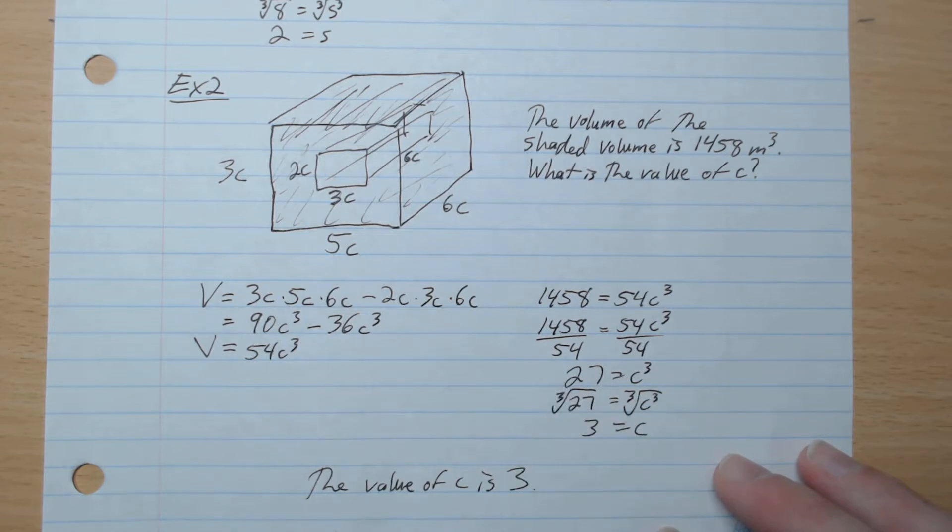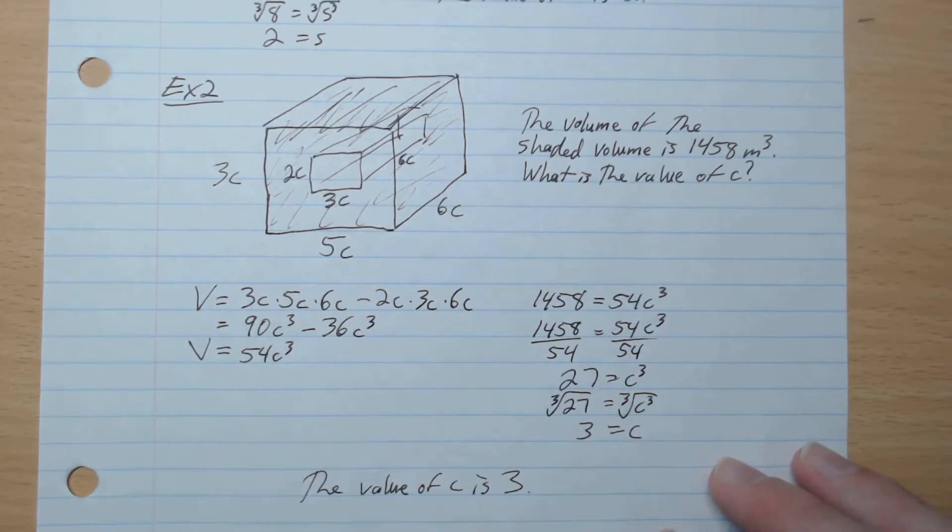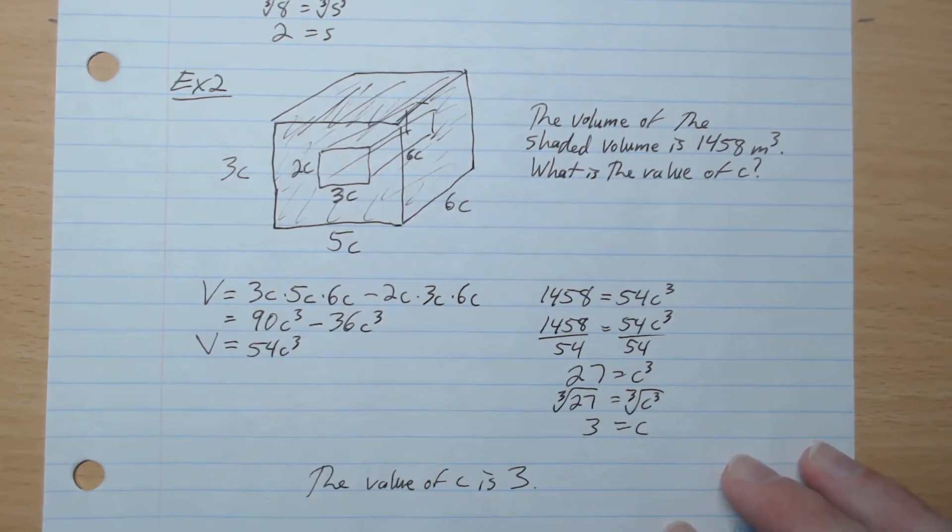c³ equals 27. Cube root both sides to isolate for c, and c is 3. So the value of c is 3.